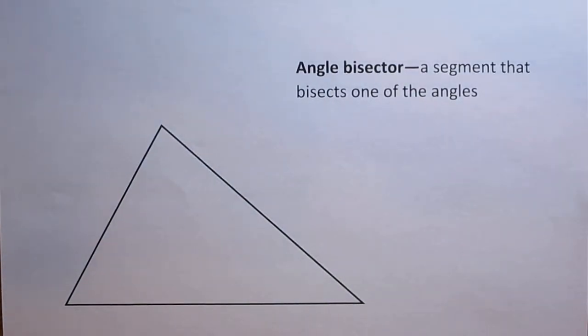All right, in this video I'm going to show you how to find the angle bisectors of a triangle. An angle bisector is a segment that bisects one of the angles.